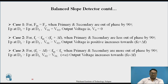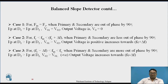In case three, the input frequency lies between Fc minus delta-F and Fc. Here the primary and secondary signals are more out of phase than 90 degrees, so the reverse of case two takes place — V02 is greater than V01, and the output voltage increases in the negative direction towards Fc minus delta-F. Overall, this produces a linear output signal spanning from Fc minus delta-F to Fc plus delta-F.